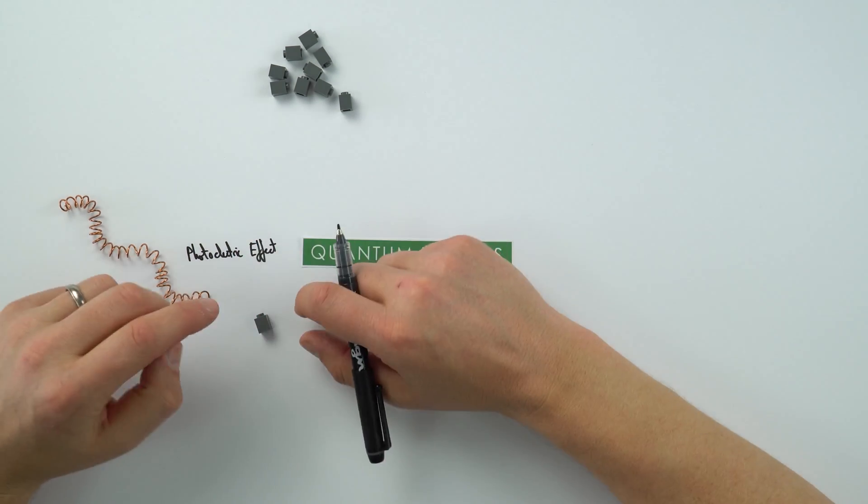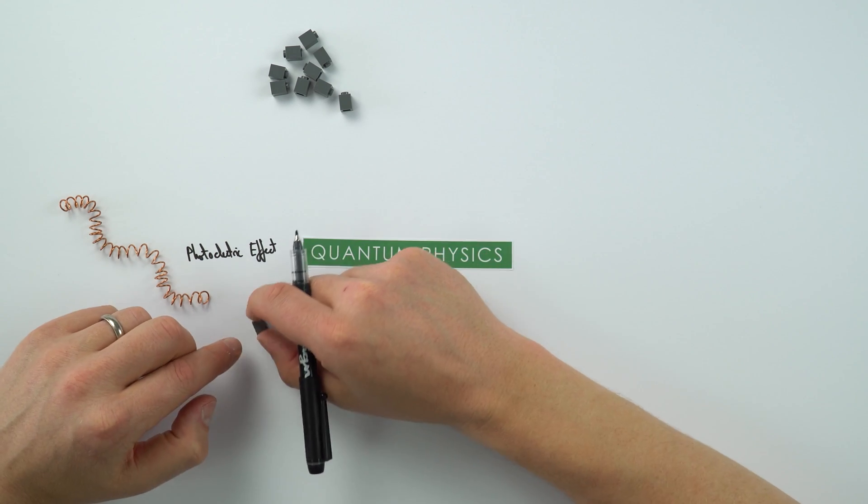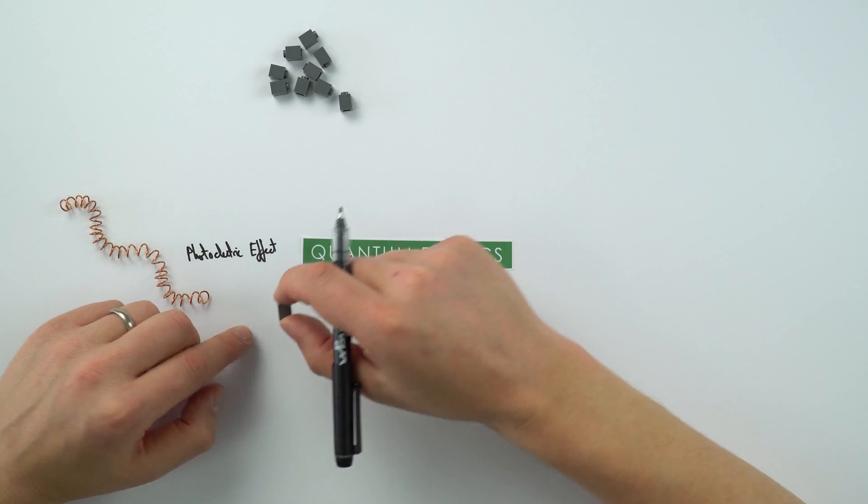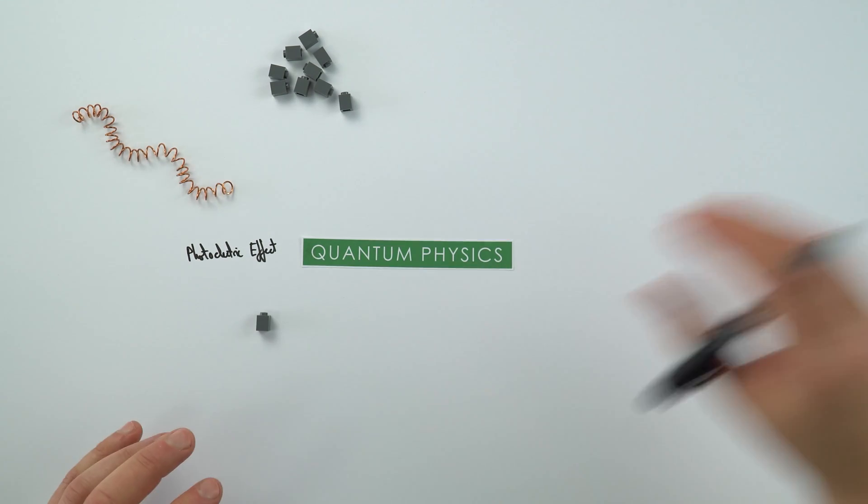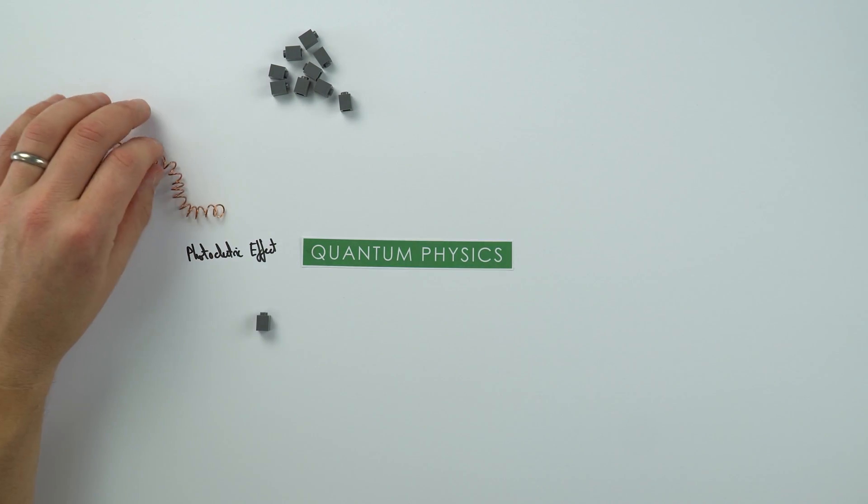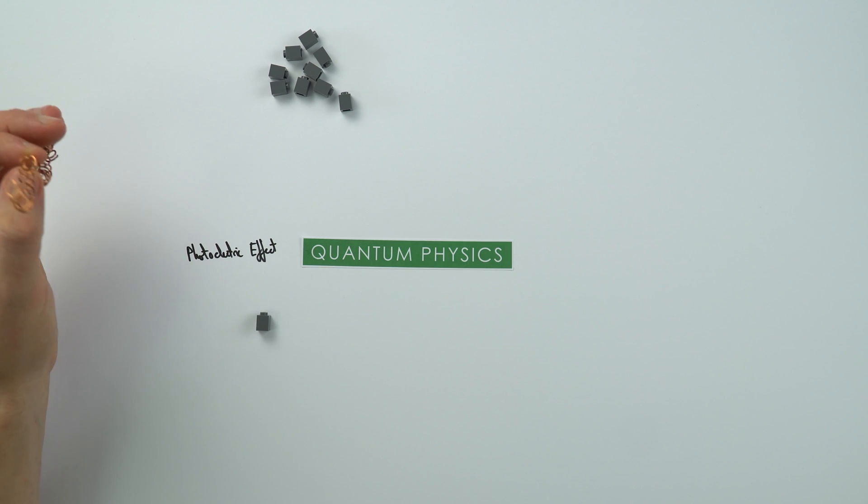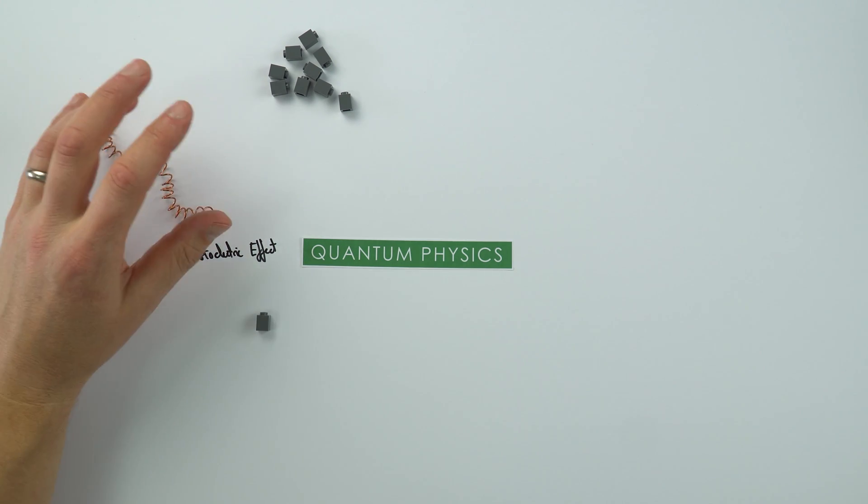Effectively, you've got light coming in that energizes the surface, the electrons gain energy, and then they can escape. Now the thing is, the wave model of light doesn't explain how electrons can leave or not leave at certain frequencies. And really what we can say is that although we often think about light as a wave, light can also be thought of as a small bundle of energy.